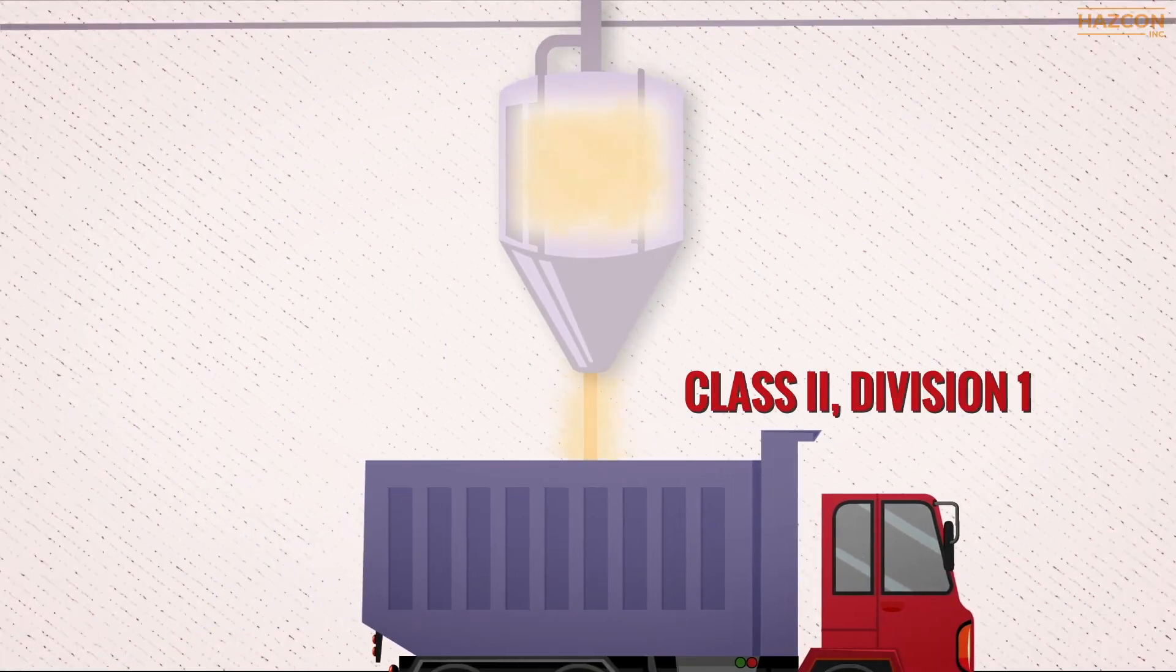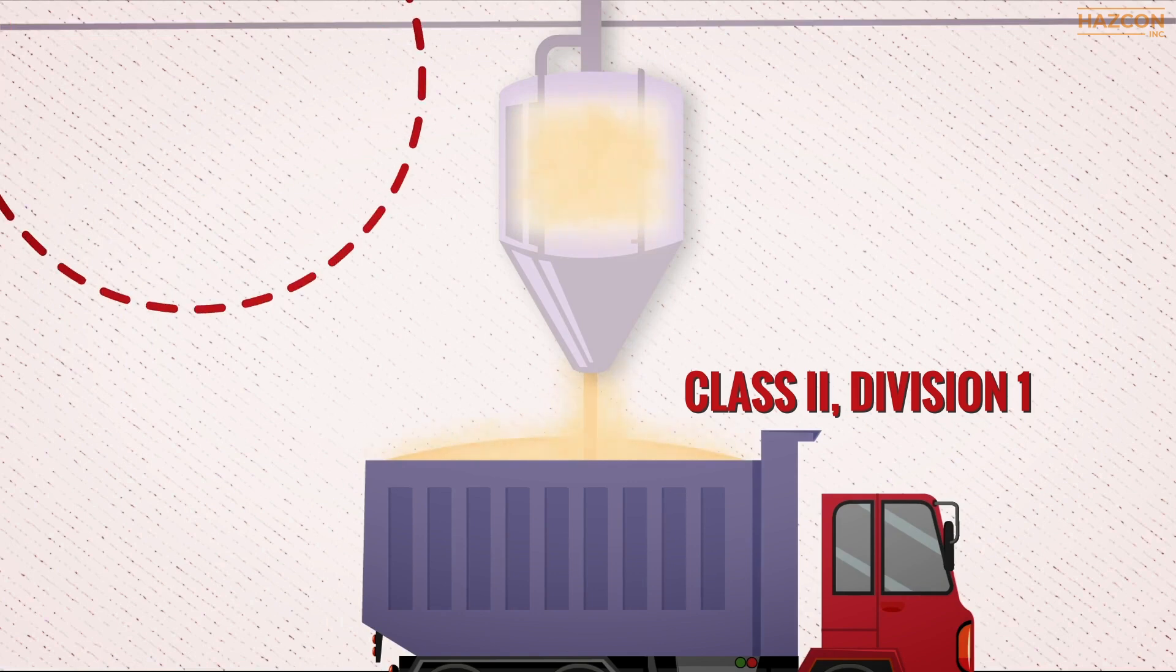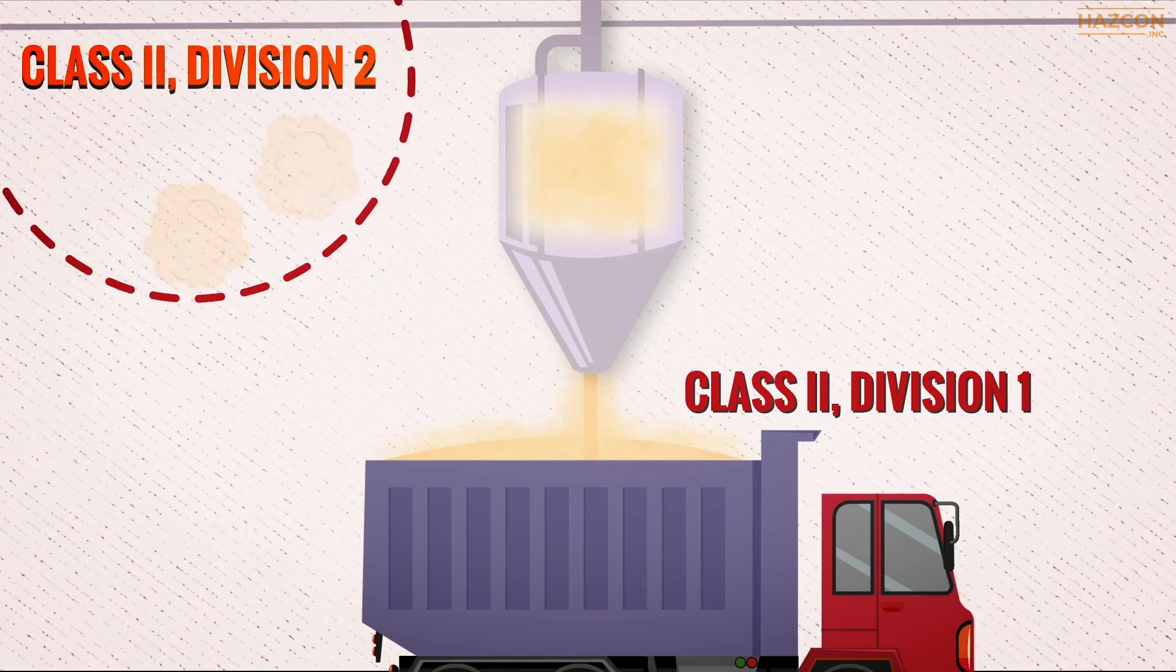Division 2 refers to the entire area where dusts may be suspended in the air if processing equipment malfunctions.